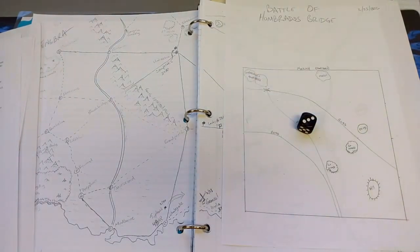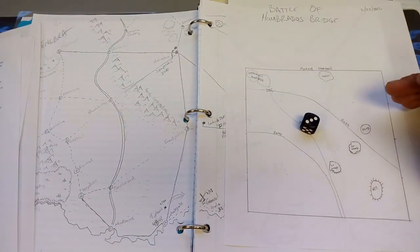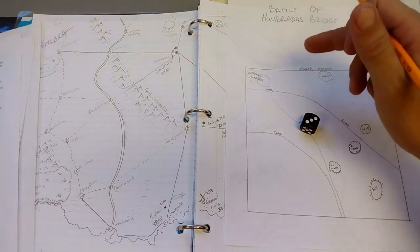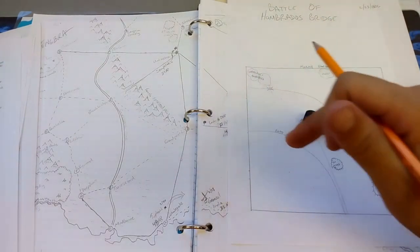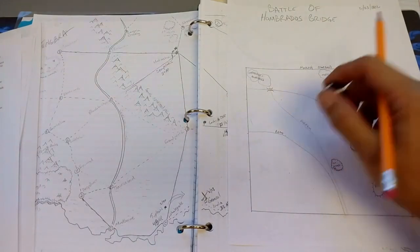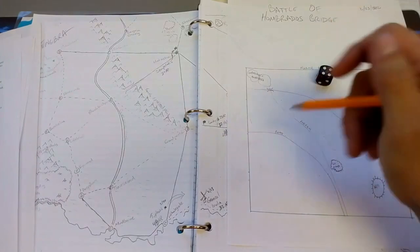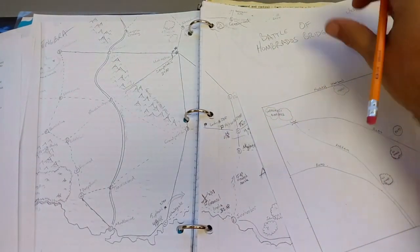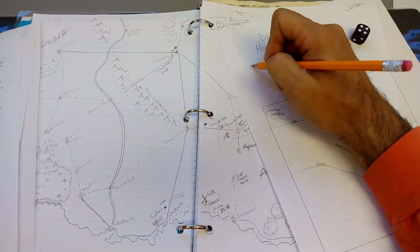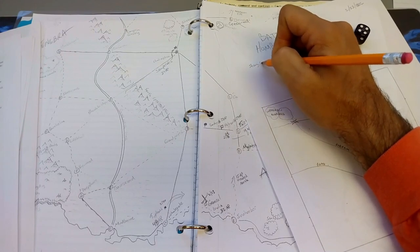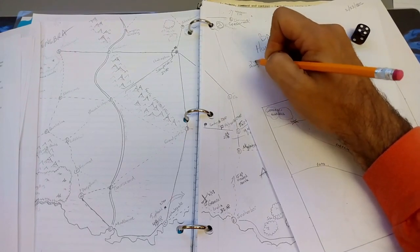Then the question is, is General Typhonus going to throw a strong left, center, or right hook? 1, 2 is left. 3, 4 is center. So Typhonus is going to go with a strong center.